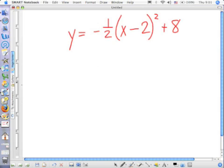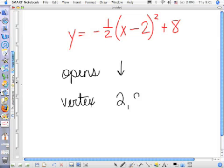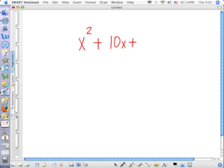In this one, y is equal to negative 1 half times x minus 2 squared plus 8. Which direction does this parabola open? Down, because negative 1 half is now a, so it's opening down, and my vertex is positive 2, 8.